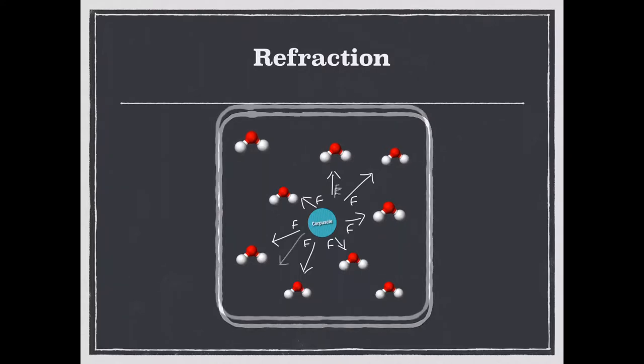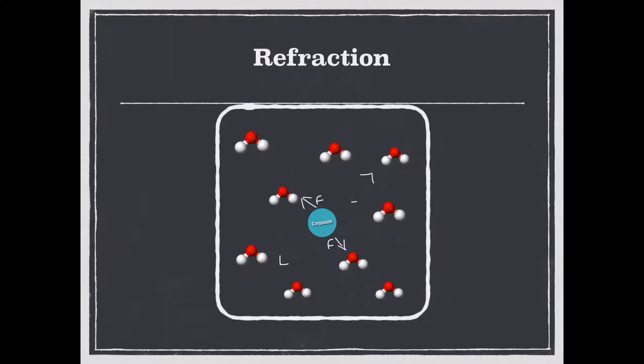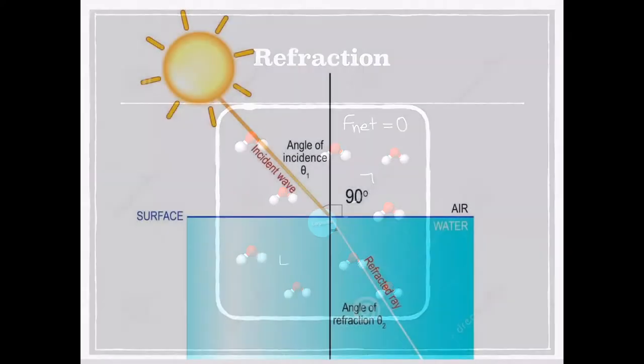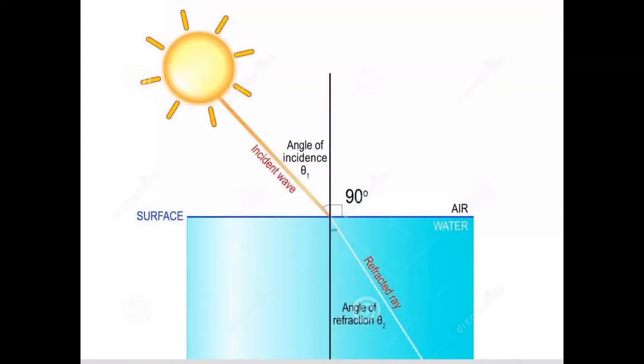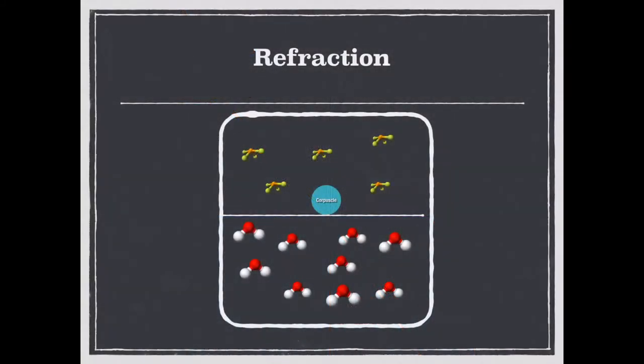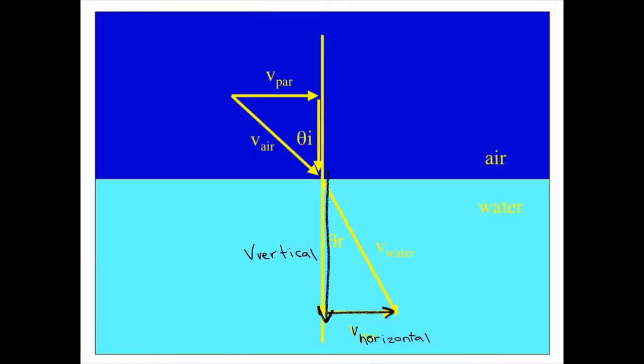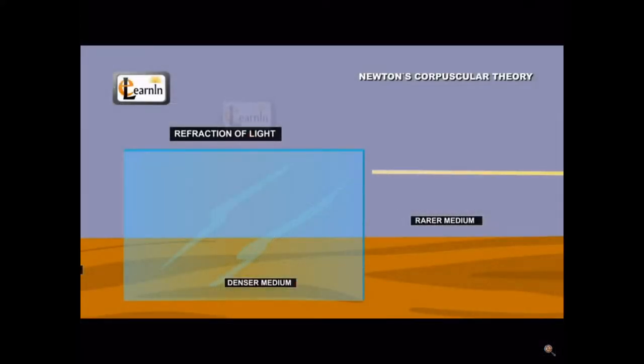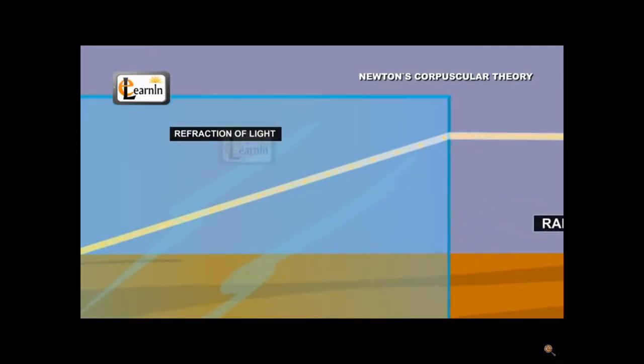If that is the case, then deep within a medium, the attractive forces cancel each other out and there is no net force on the light particle. However, when the light particle nears a boundary between two mediums, it's a different story. Due to the differences in optical density of the mediums, there will be more particles on one side than the other, meaning the light particle will experience a net force. There will be a slight attractive force towards the denser medium as it has more particles. This increases the vertical component of its velocity, however its horizontal velocity remains constant. This brief increase in vertical velocity deflects the light particle towards the normal, which agrees with what is observed.